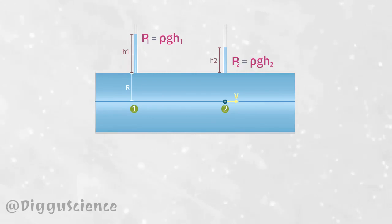Because h2 is less than h1, the pressure P2 is less than P1. This pressure difference causes fluid to flow.